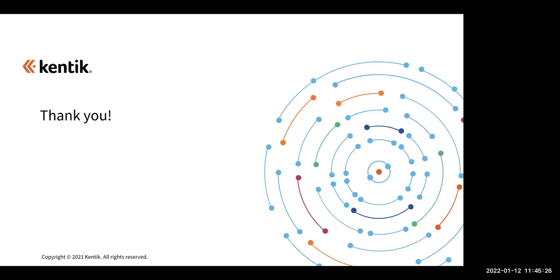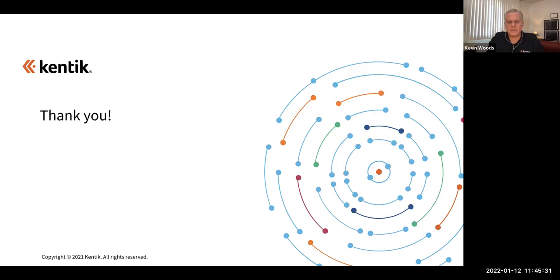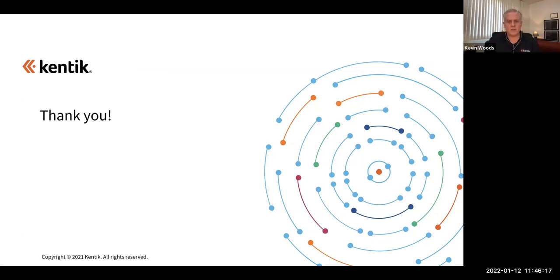Q: How are you different from ThousandEyes? Synthetic testing helps you answer a set of questions about network performance, but there are also important questions that synthetic testing alone doesn't answer. With Kentik, we have a synthetic solution for network performance questions, but we also have flow information that can answer: if I see a performance problem, is it affecting my users? Or based on traffic I'm seeing, what part of the network is most important to test? Kentik brings all of that data together into the solution, rather than just looking at network performance metrics standalone, where you wouldn't have as much context.